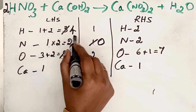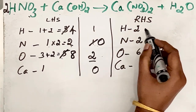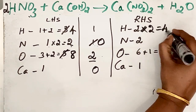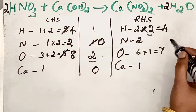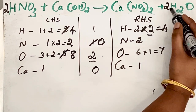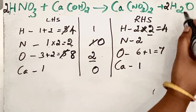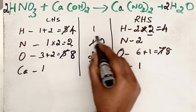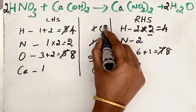Now let us move to hydrogen atoms. Left-hand side there are four hydrogen atoms; right-hand side only two. To make it four, multiply by two. We write this two as the coefficient in front of H2O. While doing so the oxygen atom count also changes: six plus two equals eight. So cut seven and write eight. Now the hydrogen difference is four minus four equals zero.